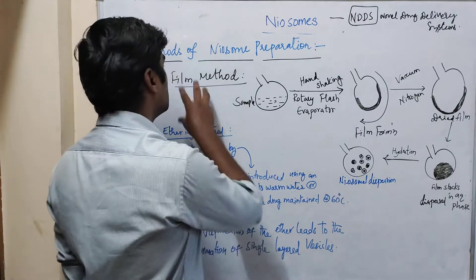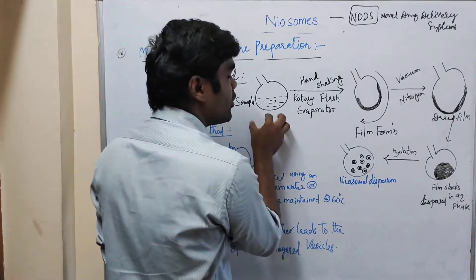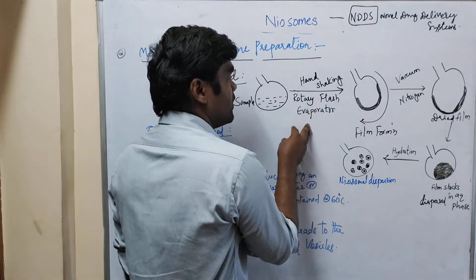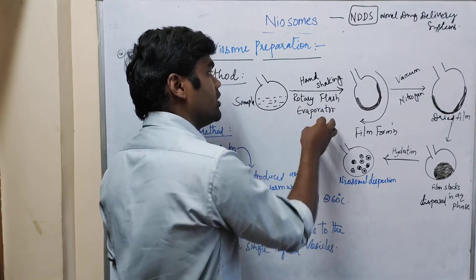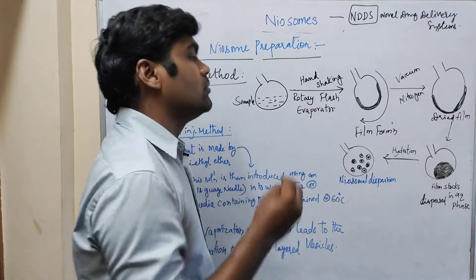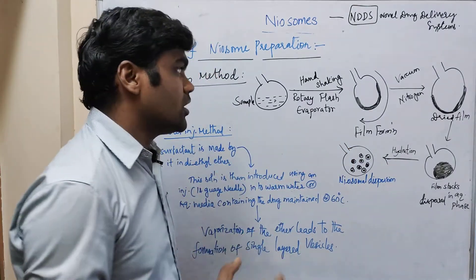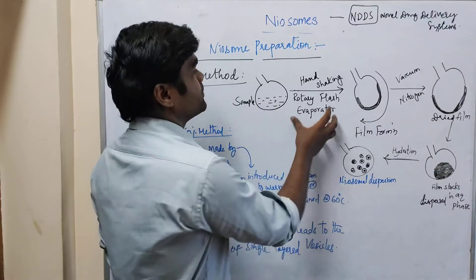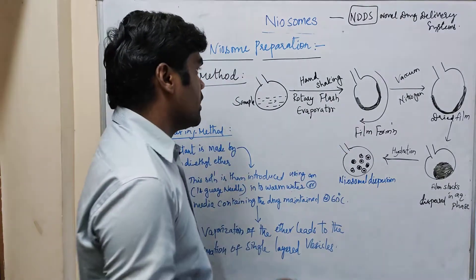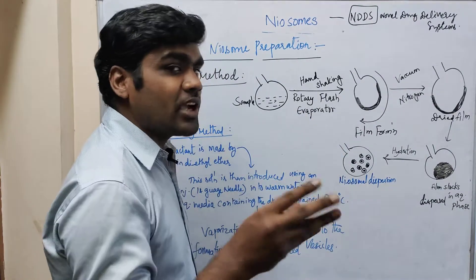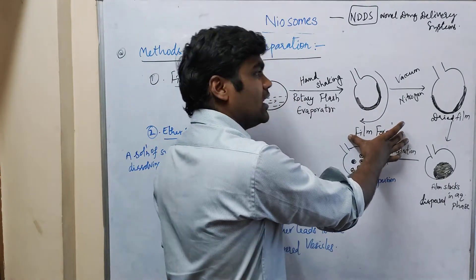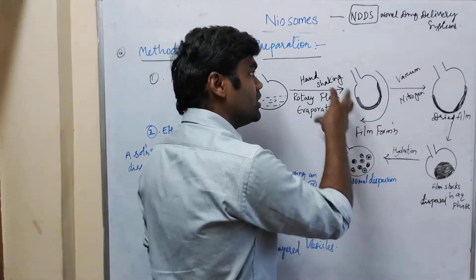In the film method, the sample is taken into a round bottom flask. We need to do handshaking and then use a rotary flash evaporator. By the help of that, we perform shaking and evaporation using the rotary flash evaporator, followed by mechanical handshaking action.